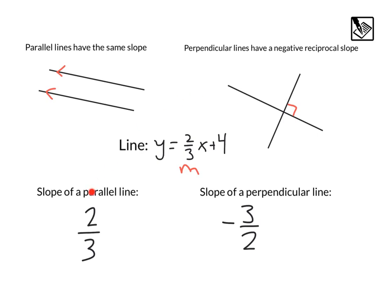So whenever you have parallel lines, you know the slope is the same. Whenever you have perpendicular lines, you know it's the opposite sign and the reciprocal. Just flip that fraction around. Alright everyone, I hope this video was helpful.